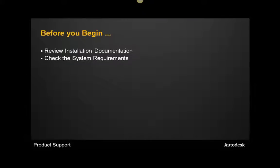You will also want to review and make sure your system meets the minimum requirements for the installation of your product. You can find these system requirements either on the installation documentation or from the product page on autodesk.com. Next, you will want to confirm that you have administrative privileges on your machine. You will not need domain administrative privileges, but you will need local administrative privileges to install the product.